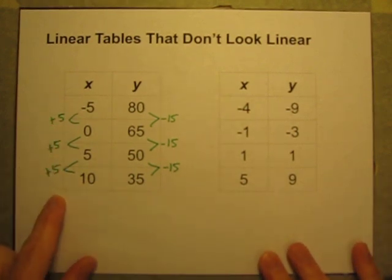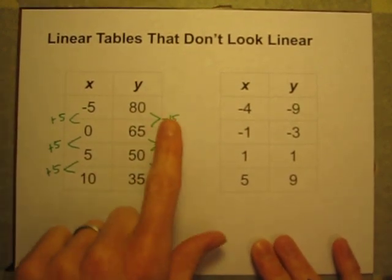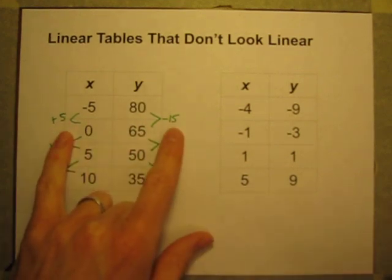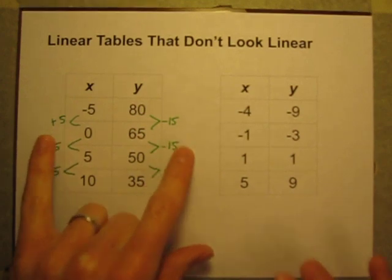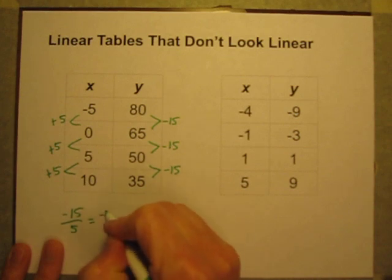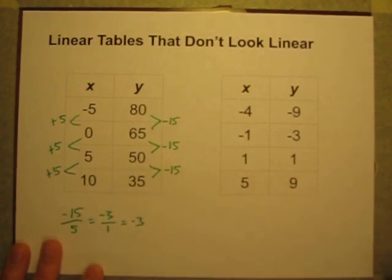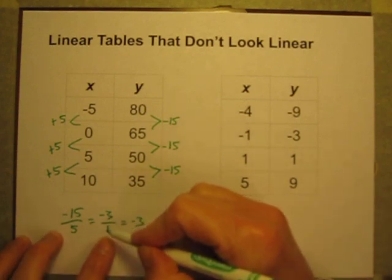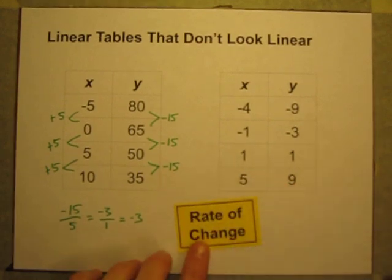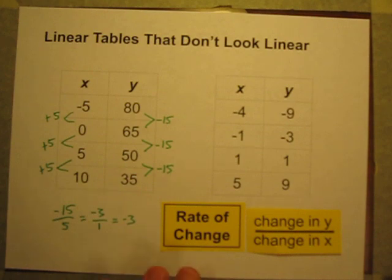All the X's increase by 5 all the Y's decrease by 15 and if I were going to get the rate of change I would do the change in Y divided by the change in X. Negative 15 divided by 5 would give me a rate of change of negative 3. Negative 15 divided by 5 means the rate of change is negative 3 over 1 or just negative 3. I lose 3 Y's every time I gain 1 X because I know rate of change is equal to the change in Y divided by the change in X.